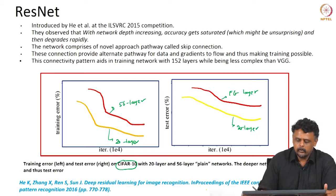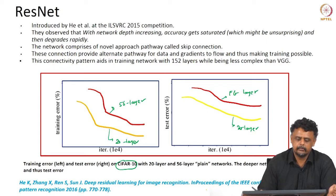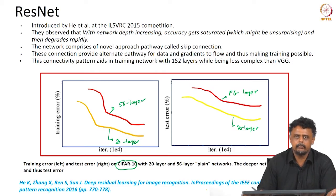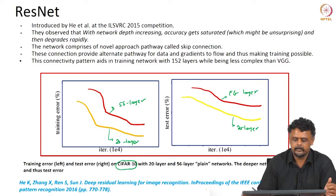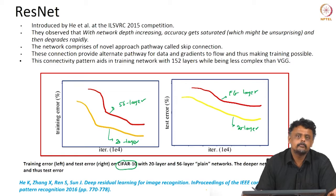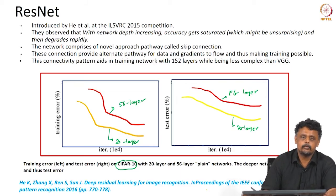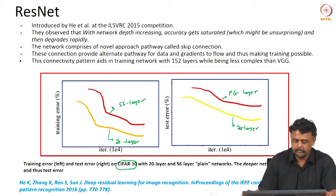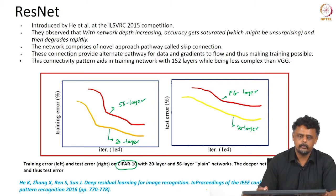To get over this problem, the ResNet paper introduces something called skip connections. These skip connections are essentially identity mappings — the network just replicates the input, which we will see in the next slide. They provide an alternate pathway for the gradients to flow and make training possible. For the ImageNet challenge, they managed to train up to a 152-layer network, though the number of parameters also increases as you go deeper.